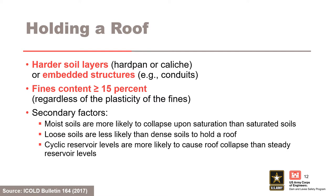For holding a roof, two primary factors are the presence of continuous hard soil layers or embedded structures and a fines content greater than or equal to 15%, regardless of the plasticity of the fines. Non-plastic silts, sands, and gravels will generally not hold a roof since the roof collapses upon saturation. Partially saturated and high fines content non-plastic soils may hold a roof near the phreatic surface, but the roof is sustained by pore pressure suction and may collapse upon saturation. Moist soils are more likely to collapse upon saturation than saturated soils, loose soils are less likely to hold a roof than dense soils, and cyclic reservoir levels are more likely to cause roof collapse than steady reservoir levels.